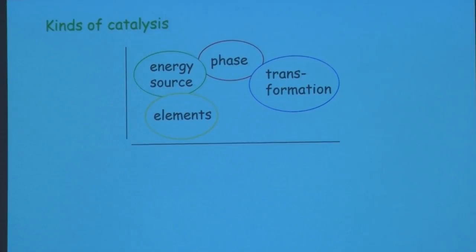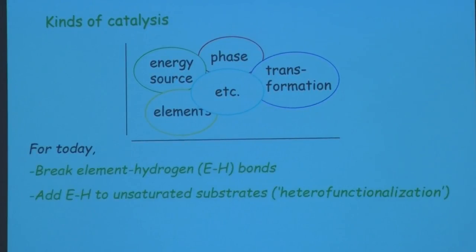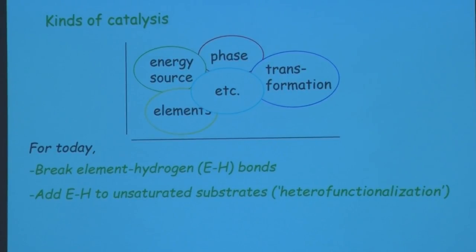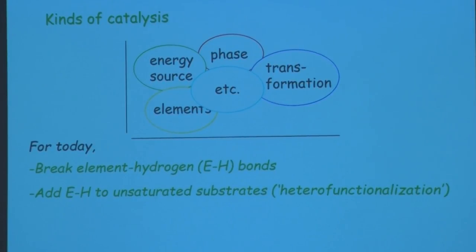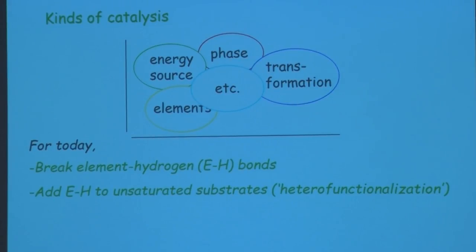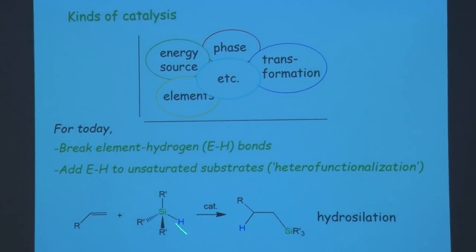I wanted to focus on two specific transformations. One is the cleavage of element-hydrogen bonds — all those main group elements can conceivably bond hydrogen and make reasonable precursors, so we snap those open and do chemistry at the metals. The particular reaction I wanted to think about is adding element-hydrogen bonds across unsaturated substrates — people call that heterofunctionalization. For example, adding a silicon-hydrogen bond across an olefin to make an organosilane product: that reaction is called hydrosilylation.